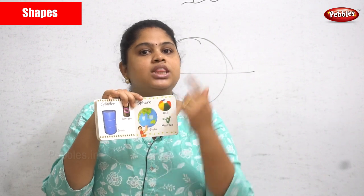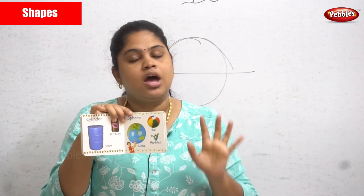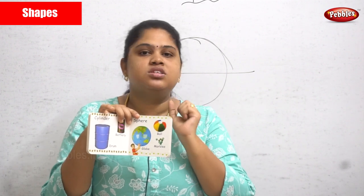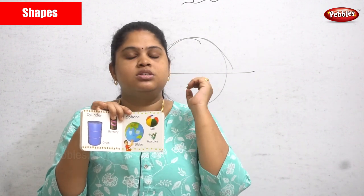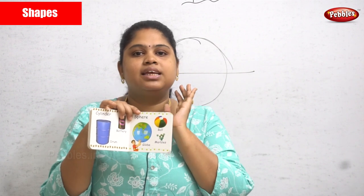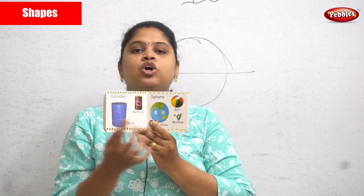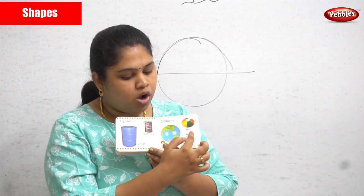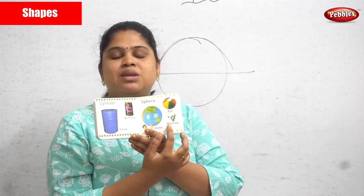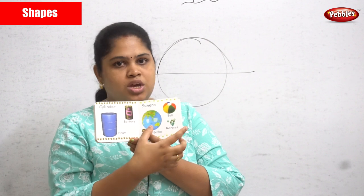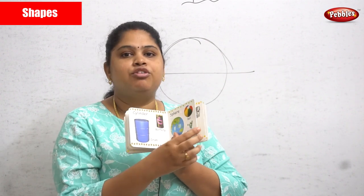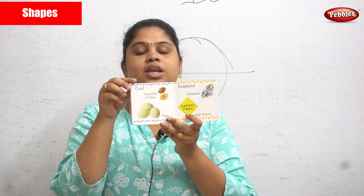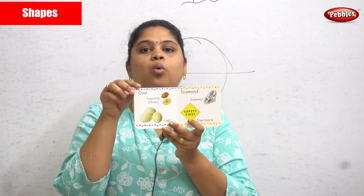Next is the sphere shape. There is a difference between a circle and a sphere — a sphere is a closed 3D shape where all sides are closed. For example, a globe looks like a sphere, balls look like a sphere, and marbles are also sphere-shaped.